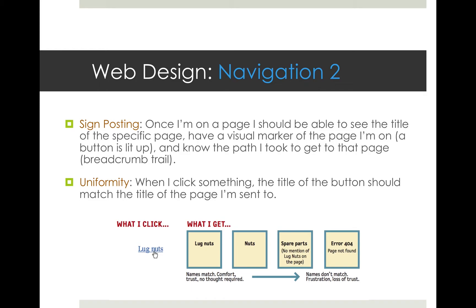When it comes to navigation, you want some kind of sign-posting. Once I'm on a page, I should be able to see the title of the specific page, have a visual marker of which page I'm on — maybe a button is lit up on the navigation tab — and know the path I took to get there. You often see a breadcrumb trail in small text somewhere on the page: 'Home → Product Page → Lug Nuts.' It shows you how you got to where you are. If a website lacks sign-posting, it's a good way to confuse users and get them to misunderstand or forget where they are.